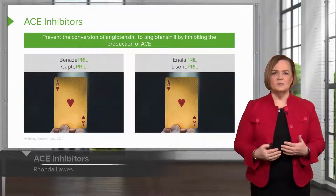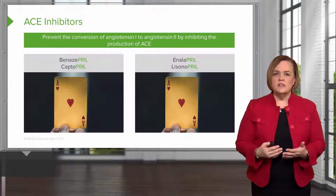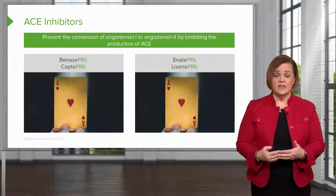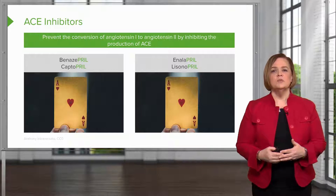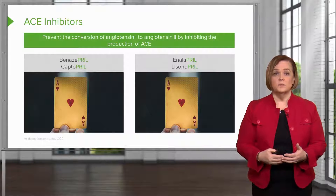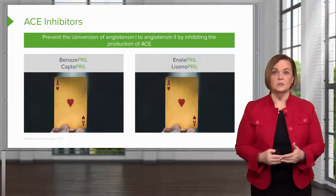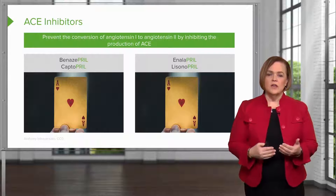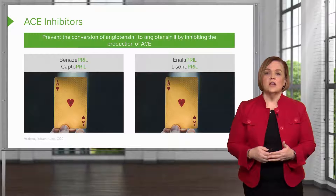Let's look at ACE inhibitors in a little more detail. You see how they fit into our flowchart? They prevent the conversion of angiotensin 1 to angiotensin 2 because you have less ACE — that's what that job is. They end in -pril. So look at the names up there: benazepril, captopril, enalapril, lisinopril. They all end in -pril. P-R-I-L is the ending for most ACE inhibitors, and that's what you're going to see in the generic name.